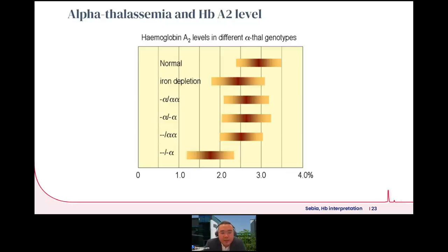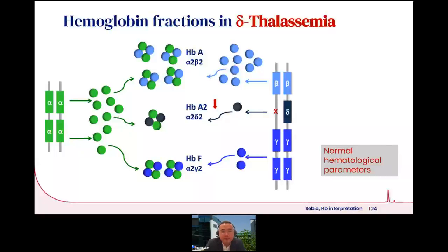Looking at increasing severity of alpha gene loss, the reference ranges for hemoglobin A2 levels show that many values fall within overlapping ranges. In major alpha thalassemia, hemoglobin A2 levels are more significantly shifted toward the lower end.